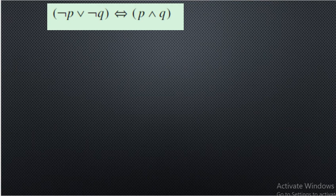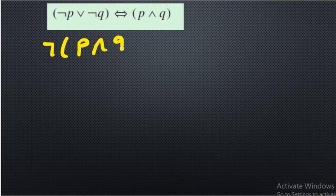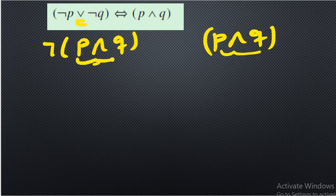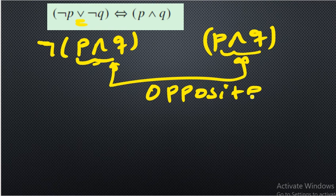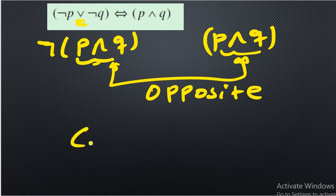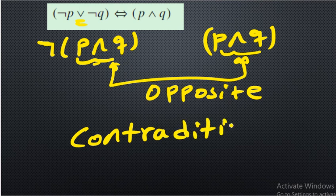The seventh one: two propositions connected by biconditional. On the left hand, extracting the negation by De Morgan's rule gives p and q (with AND, since OR changes to AND). The right hand is p and q. The inner brackets are the same, but one side has negation outside — meaning they are opposites. They will have opposite truth values: if one is true, the other is false. In case of biconditional with opposite truth values, it's always false — that is contradiction.